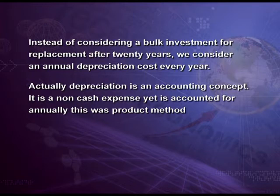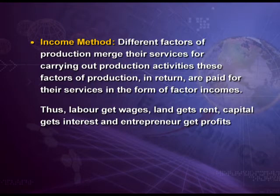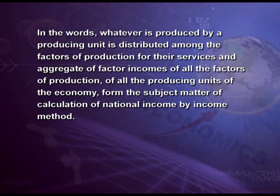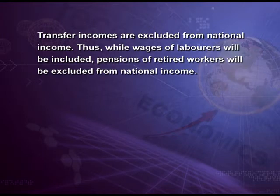Now, income method. Different factors of production merge their services for carrying out production activities. These factors of production are paid for their services in the form of factor incomes: labor gets wages, land gets rent, capital gets interest, and entrepreneur gets profit. In other words, whatever is produced by a producing unit is distributed among the factors of production for their services. Aggregates of factor incomes of all factors of production of all producing units form the subject matter of calculation of national income. Only incomes earned by owners of primary factors of production are included; transfer incomes are excluded from national income.